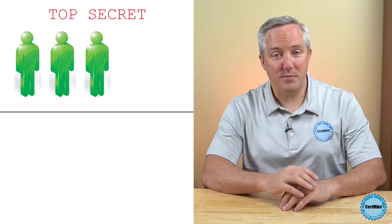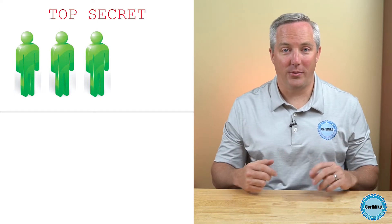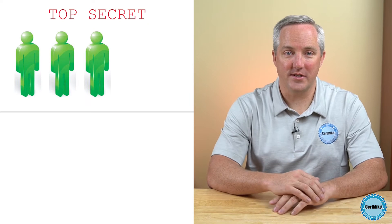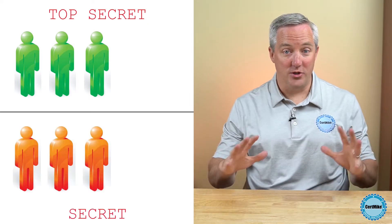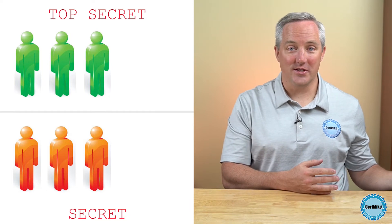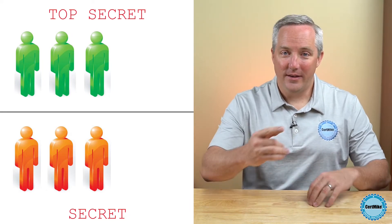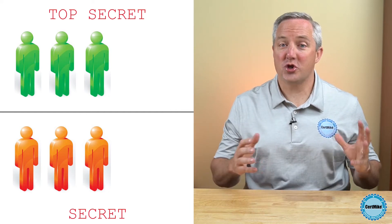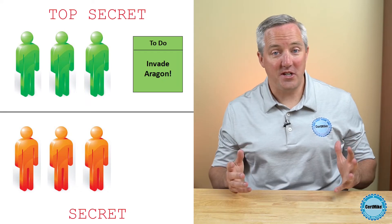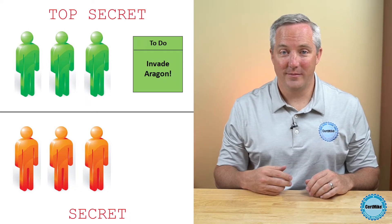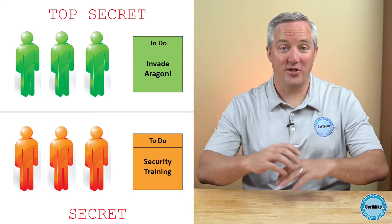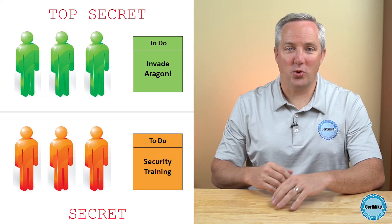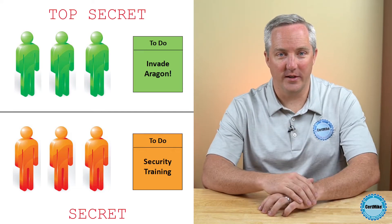You want to protect the confidentiality of those plans because you don't want your enemy to find out you're coming. In this picture, all the people in green are in on the plan — they all have top secret clearances. There are also other people around who only have secret clearances and aren't allowed to know what's going on; they're shown here in orange. Each group has a shared to-do list: the top secret list says "invade Aragon," and the secret list says "finish security awareness training."